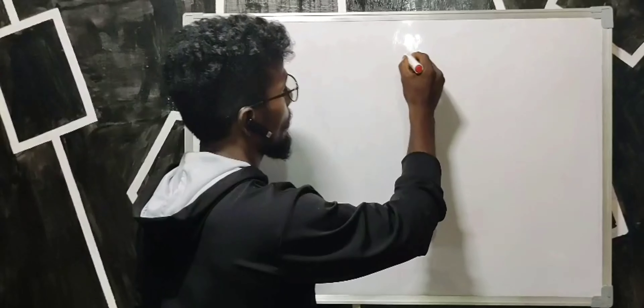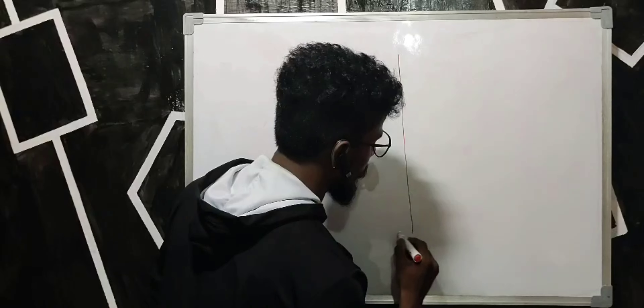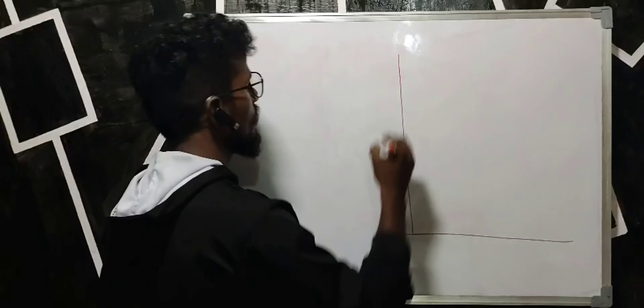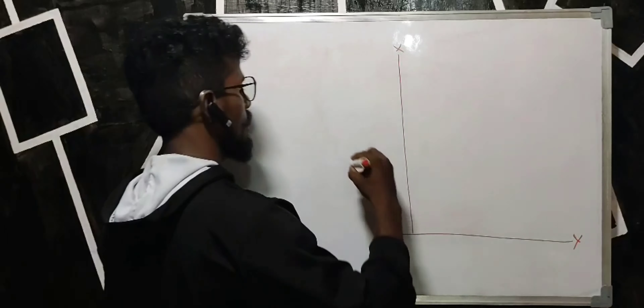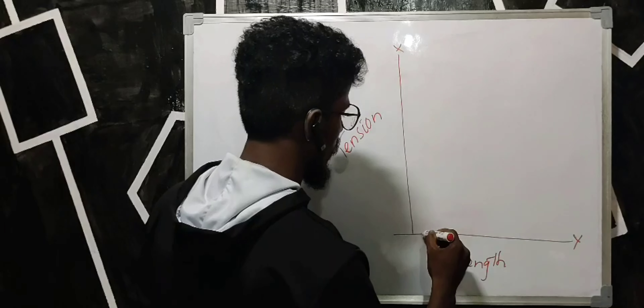Now we are going to discuss the isometric length-tension relationship, which is also called the skeletal muscle sarcomere length-tension relationship — only for isometric contraction. The graph has tension on the x-axis and length on the y-axis.